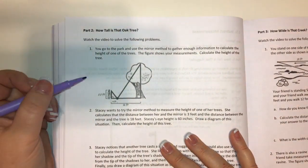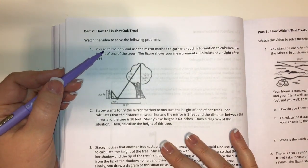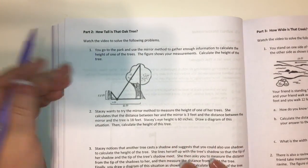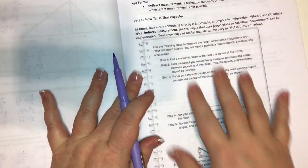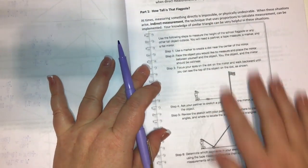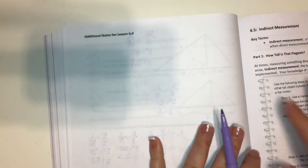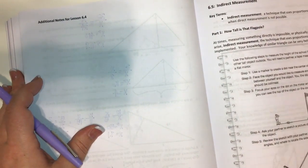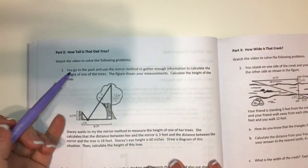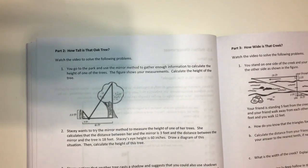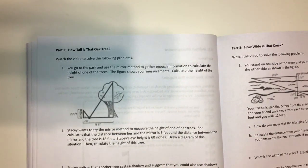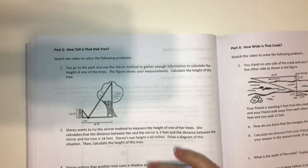This one's a little difficult to see. You go to the park and use the mirror method to gather enough information. So the mirror method was described on this previous page, right? So this is actually an activity that if we weren't a credit recovery class we would actually go outside and do. But you can just read through on how we would do that before you do this problem. But you go to the park and you use the mirror method to gather enough information to calculate the height of one of the trees. The figure shows your measurements. Calculate the height of the tree.